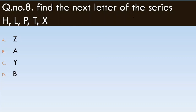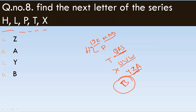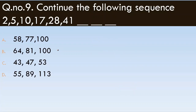Find the next letter of the series H, L, P, T, X. The difference between each letter is 4 positions: H to L is 4, L to P is 4, P to T is 4, T to X is 4. Continuing from X, adding 4 gives B, wrapping around the alphabet. So B is the correct answer.